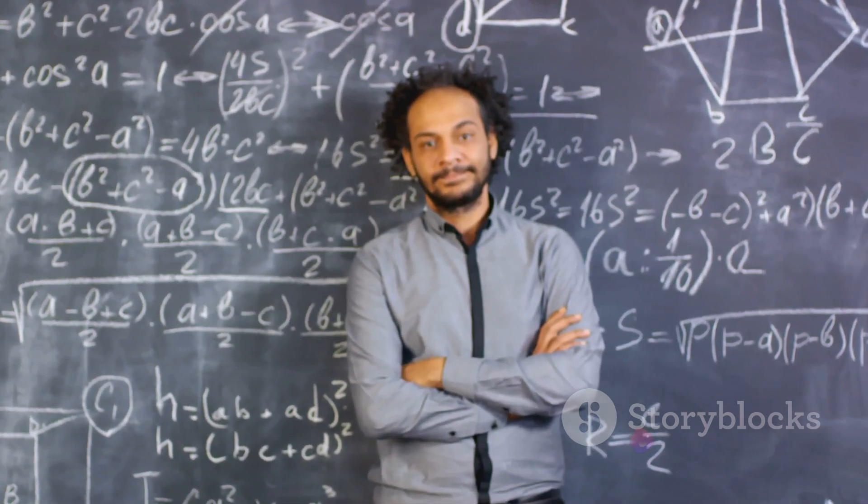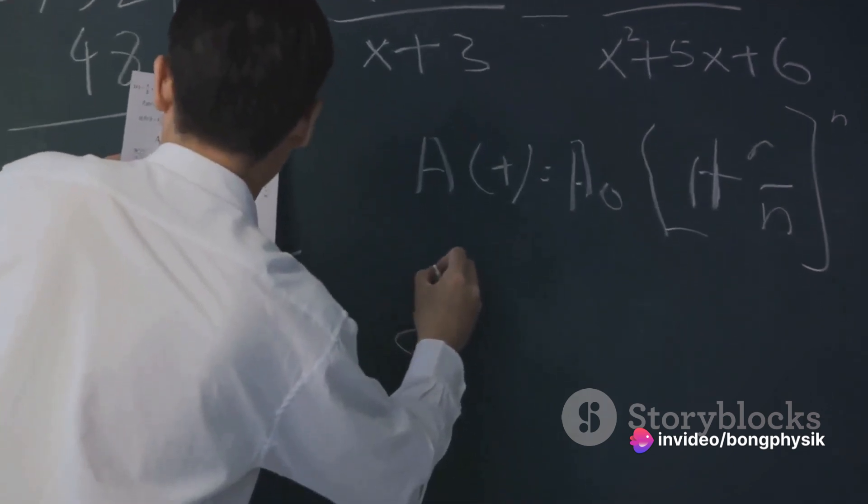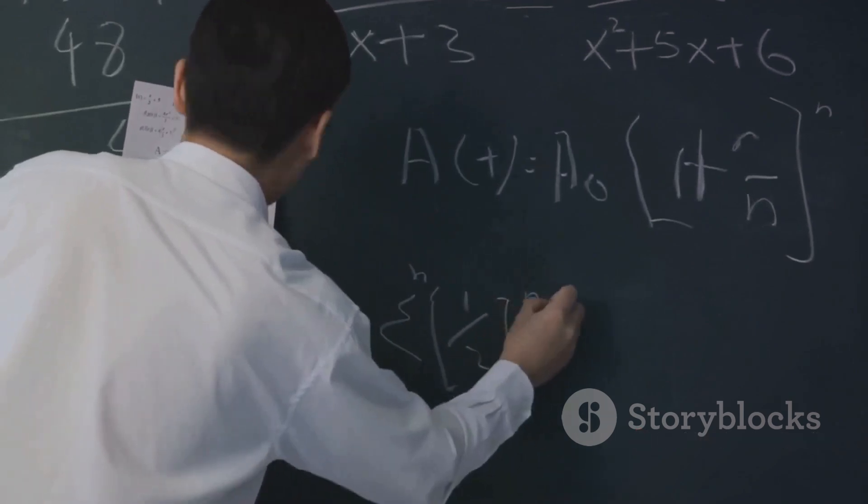His prodigious intellect, however, shone through these difficulties. He began to exhibit his uncanny mathematical abilities by the age of 12, a time when most children are just beginning to grasp basic algebra.